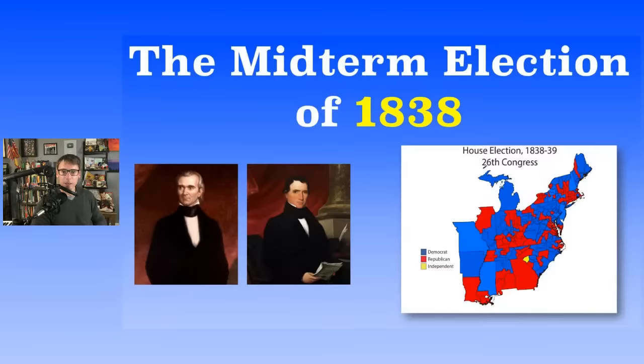In the House of Representatives, the Democratic Party lost a couple seats but still held on to a slim majority. There were 242 seats total; 122 were needed for a majority. Democrats got 126. Whigs were looking pretty good though — they gained 16 seats, up to 116. There was also one independent.